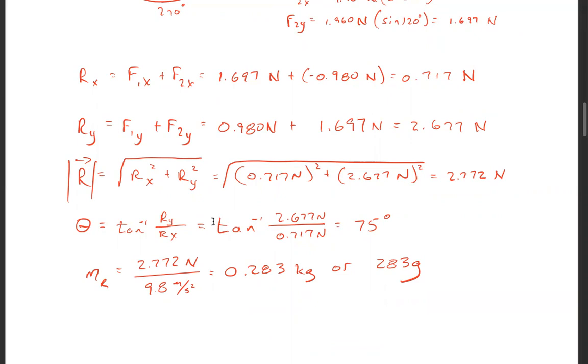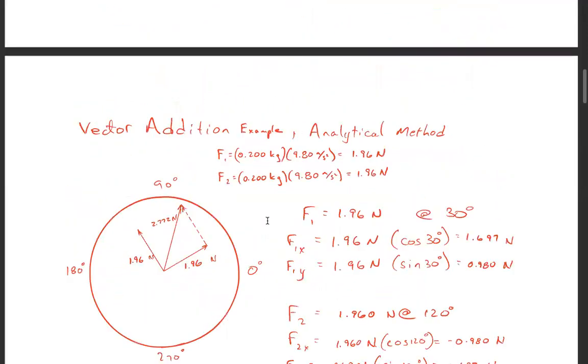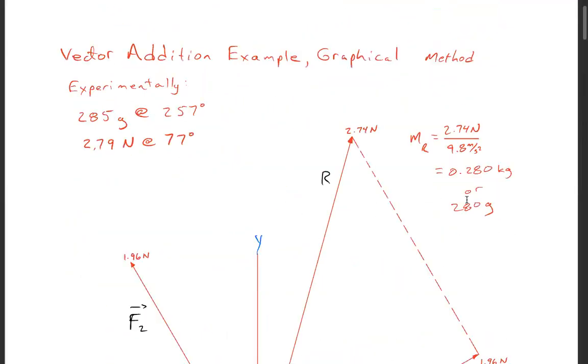And we can see I got 283 grams analytically, I got 280 grams graphically, and 285 grams experimentally. So you can see there's a bit of error, and that's part of what this exercise was supposed to show you. The analytical method is by far the most accurate. The graphical and the experimental, they're not as accurate, but they get you in the ballpark.